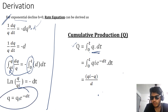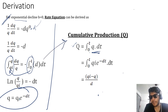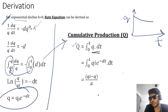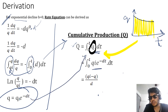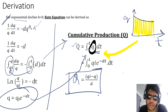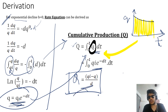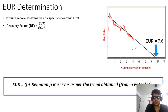Once we obtain this equation, let's find cumulative production capital Q. To find capital Q, I found the area under the curve. Getting this area under the curve gives the cumulative Q. Substituting the q expression and solving it, the cumulative Q for exponential decline is obtained. This is very important — you have to remember these equations; they are very important for finding EUR.